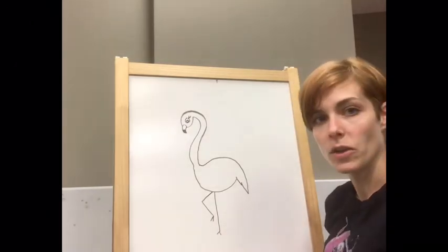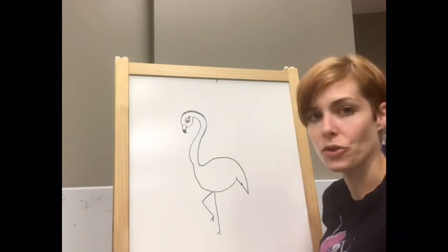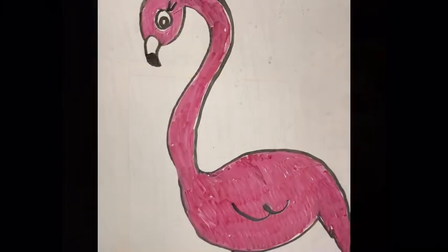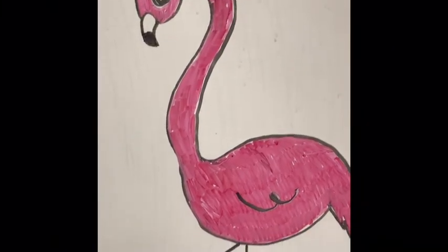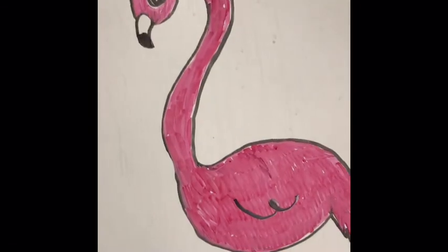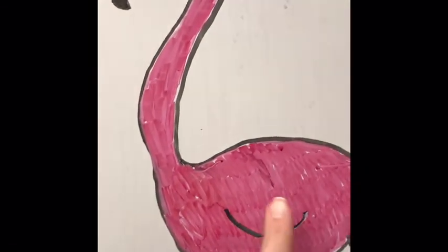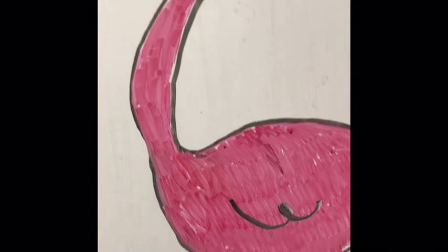There you go. You have a really cute flamingo. I will color it in and show you the final product. Alright, here's my colored in flamingo. I added a little bit of a wavy curly line right here just to make some wing.